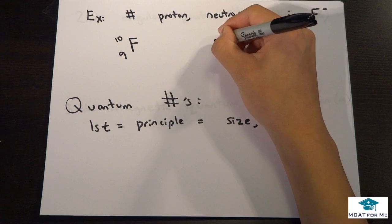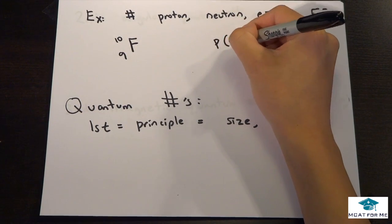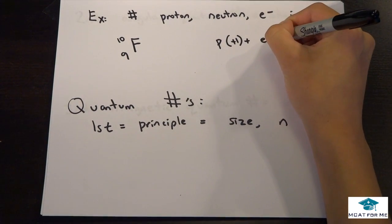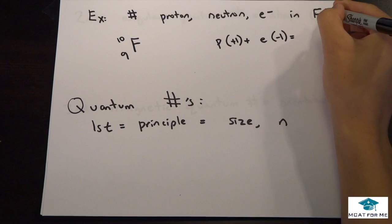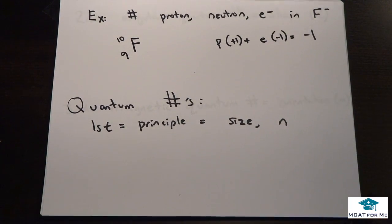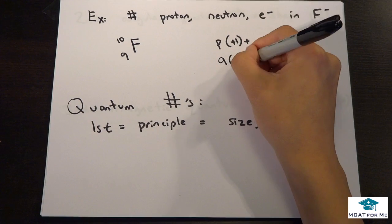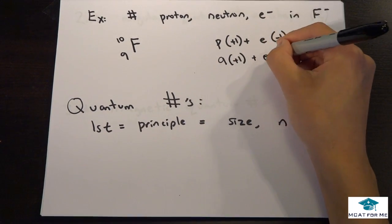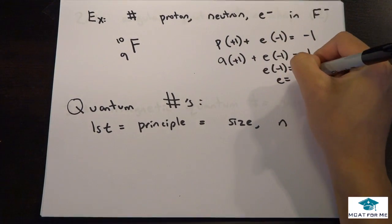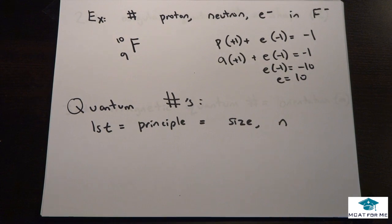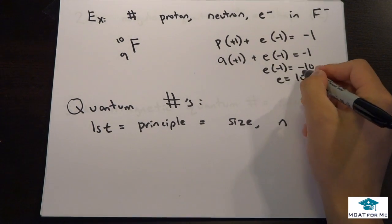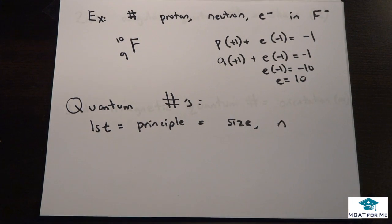Now we need to find the number of electrons. We know protons have a charge of plus 1 and electrons have a charge of minus 1, and the total charge is minus 1. So 9 times plus 1 plus electrons times minus 1 equals minus 1, giving us 10 electrons. This makes sense because electrons have a minus 1 charge, and if it's negative you know there has to be more electrons than protons.